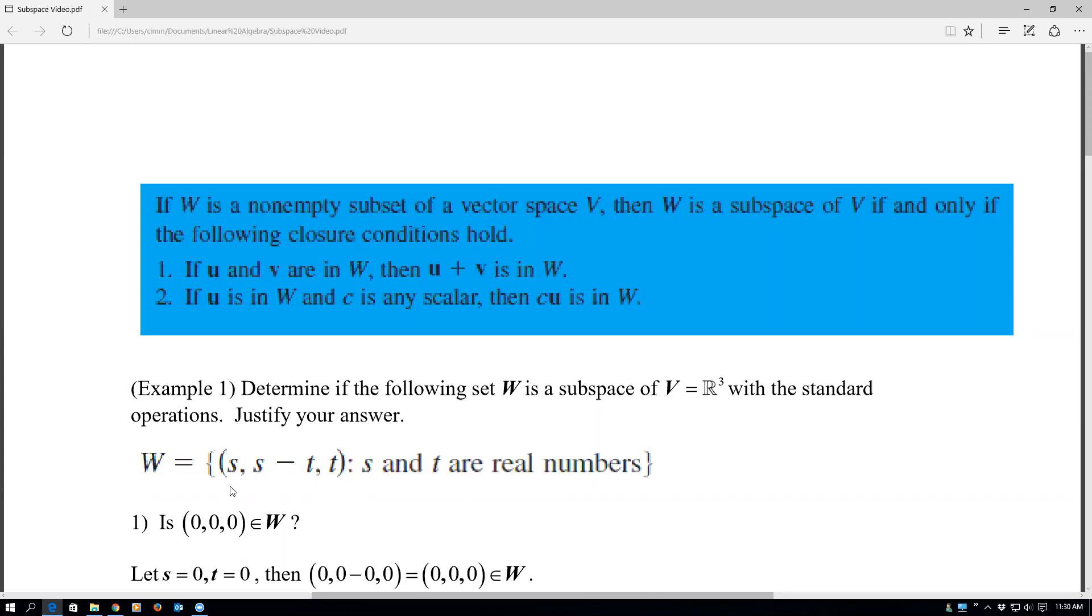So this one, of course, has three components, but they have to look like this. So it has to be S, some value S, and then S minus another value, and then T, so another value on that set.